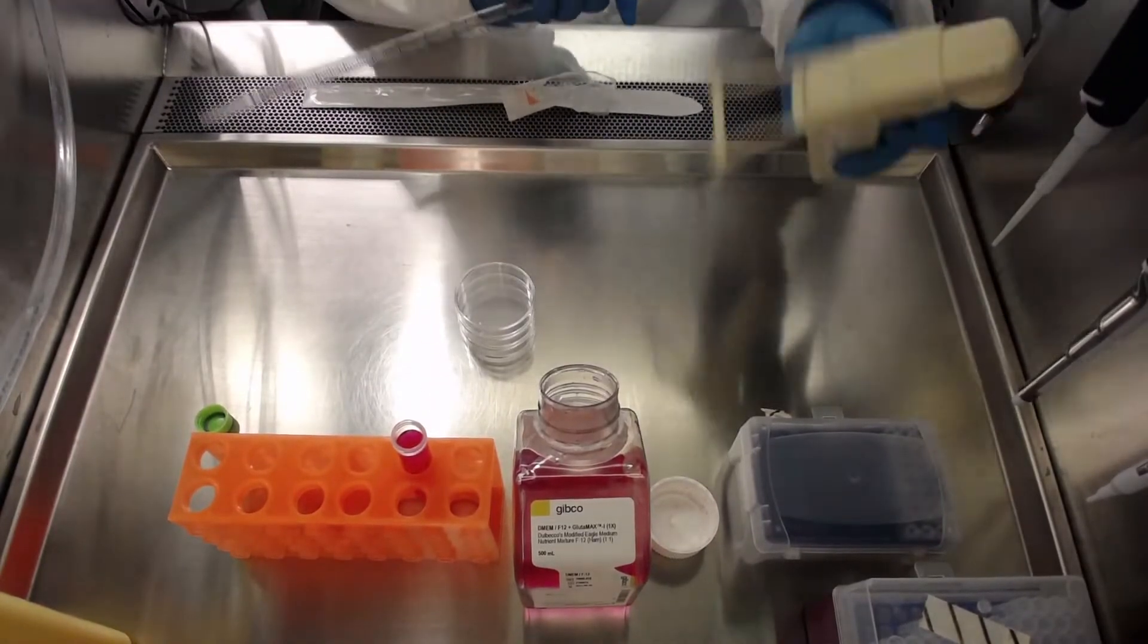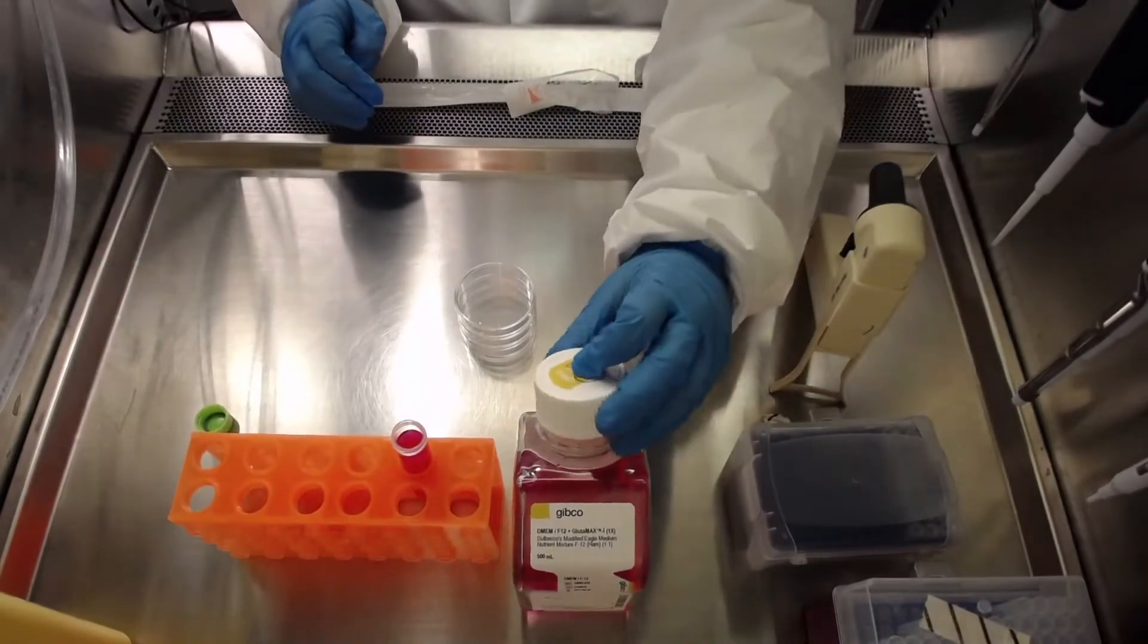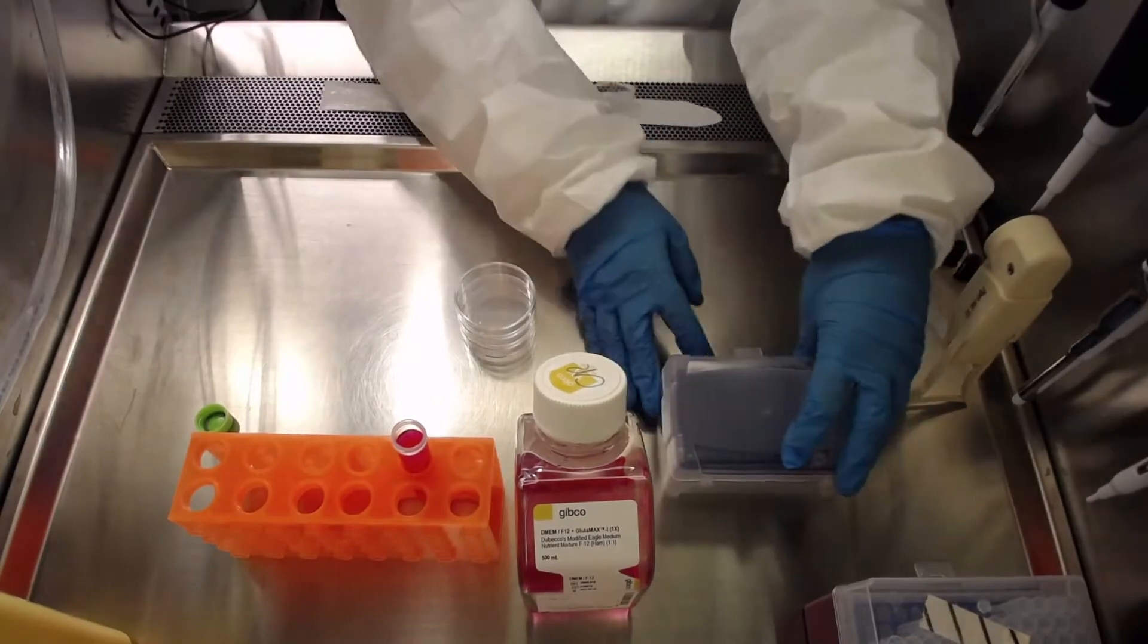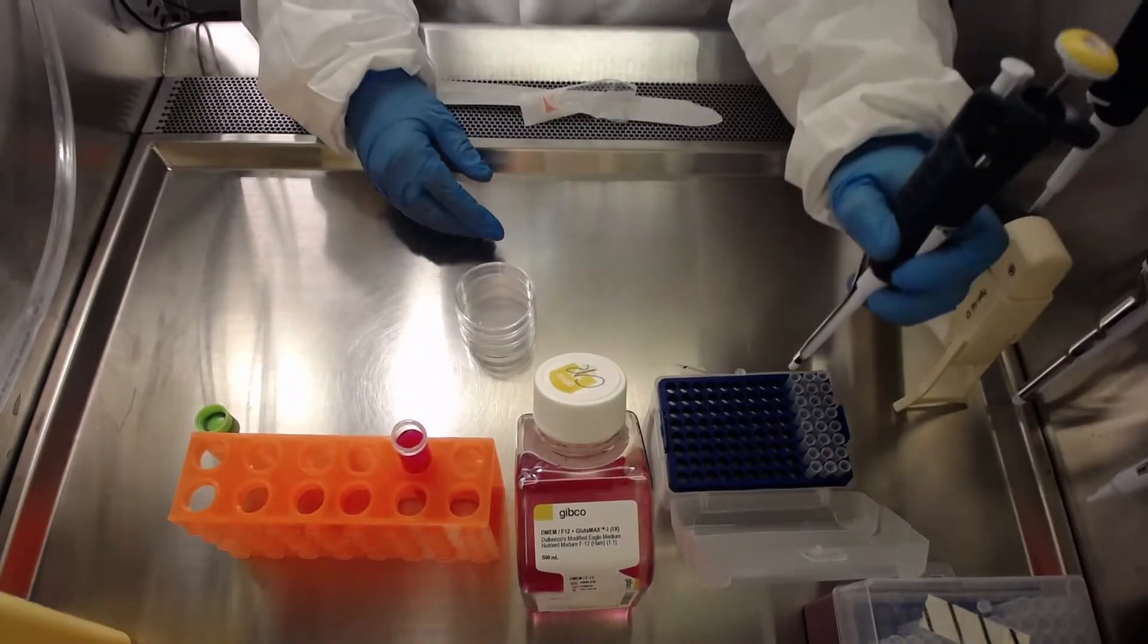As mentioned, matrigel matrix is sensitive to temperature and will start to form a gel at 10 degrees Celsius and will also rapidly gel at temperatures over 22 degrees Celsius.